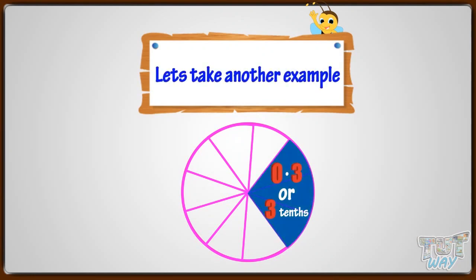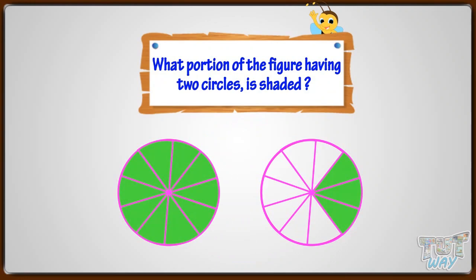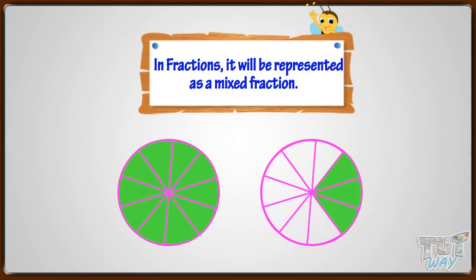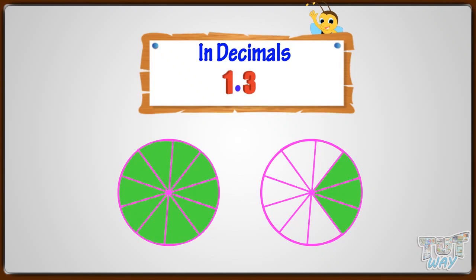Let's take another example. What portion of the figure having two circles is shaded? Here, 1 whole is shaded, and in another circle, 3 out of 10 parts are shaded. So in fractions, we can represent it as a mixed number. Here, 1 represents a whole and 3 by 10 represents the fraction portion. In decimals, 1 represents the whole and 0.3 represents the three parts of a whole.